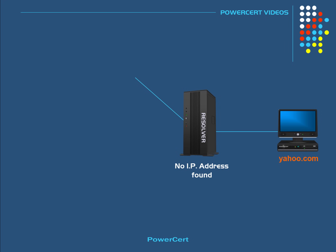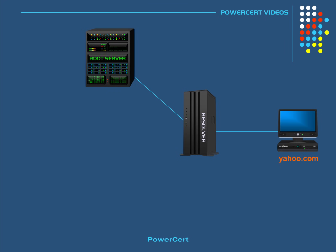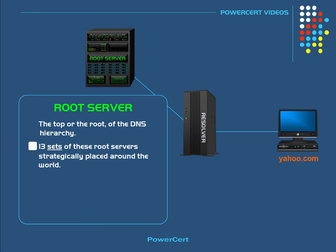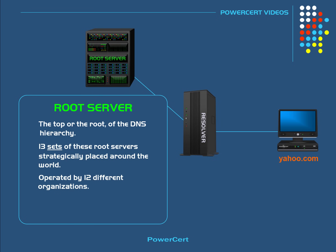And if it can't find it, it will send the query to the next level, which is the root server. The root servers are the top or the root of the DNS hierarchy. There are 13 sets of these root servers, and they are strategically placed around the world. They are operated by 12 different organizations, and each set of these root servers has their own unique IP address.